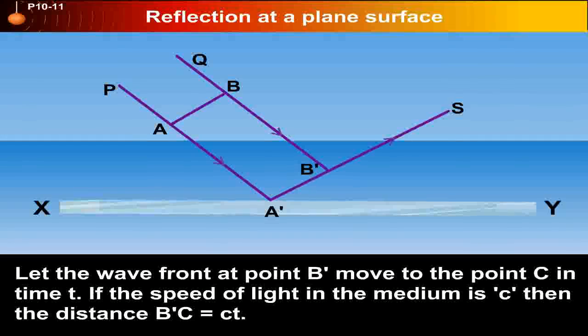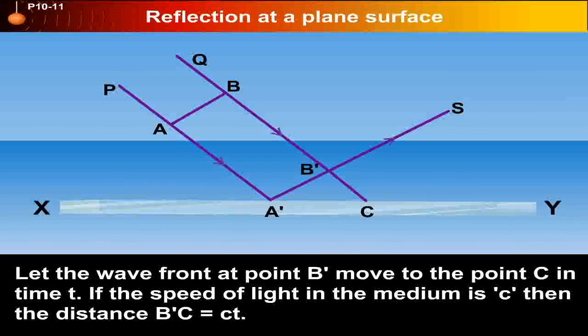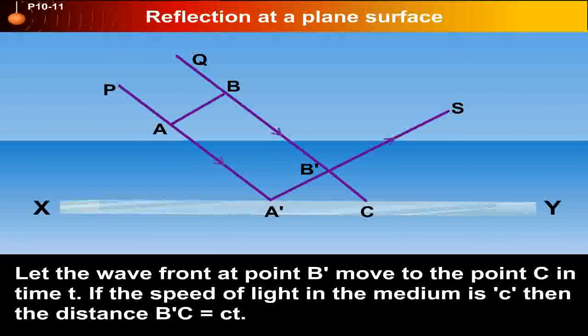Let the wavefront at B' move to the point C in time T. If the speed of light in the medium is C, then the distance B'C is equal to CT.